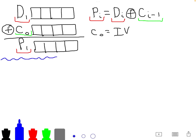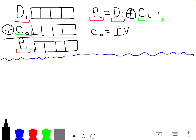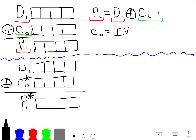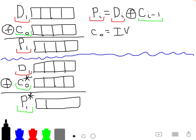Now we'll draw up a scenario of what the attacker can do when trying to manipulate the ciphertext. We still have D1, which is unchanged. We introduce C0*, a ciphertext value that the attacker manipulates. The oracle will XOR D1 with C0* and produce P1*, a modified plaintext, because if C0 is different, the plaintext will also be different. The attacker can infer what the plaintext will be based on feedback from the oracle.